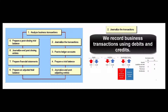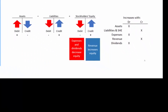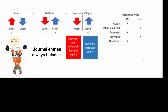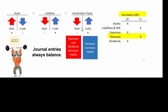Step two: if there is something to record, we record it with a journal entry. Journal entries use debits and credits. Debit means left, credit means right — one isn't good, one isn't bad. Our rules are: assets increase with debits; liabilities and shareholders' equity accounts increase with credits. Expenses are debits. The opposite of expenses, which is revenue, must be credits, and dividends start with D, which reminds us that they're recorded with debits.